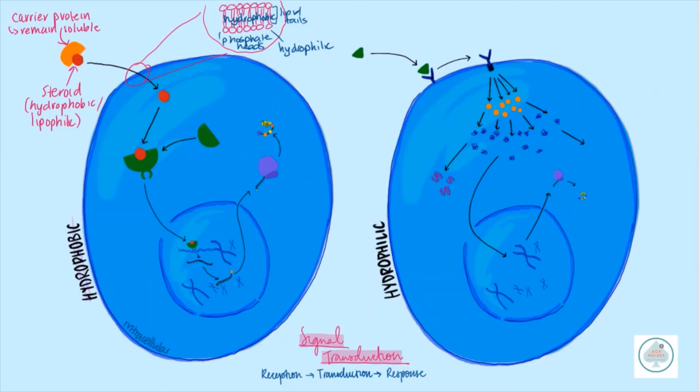This means our steroids, for example, are able to move directly through the membrane. That is one of the key differences between a hydrophilic and hydrophobic pathway. So this messenger molecule can move through the phospholipid bilayer as it's attracted to those lipid tails. When it gets through, it's going to diffuse and move around the cell until it finds its complementary receptor protein.